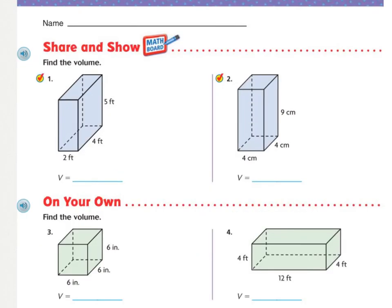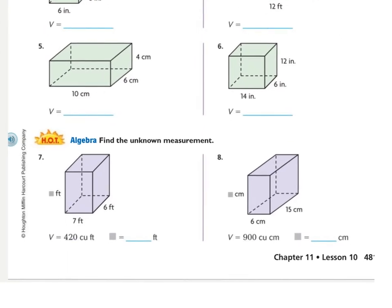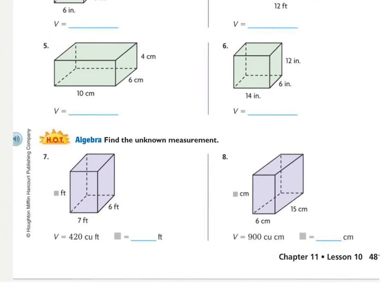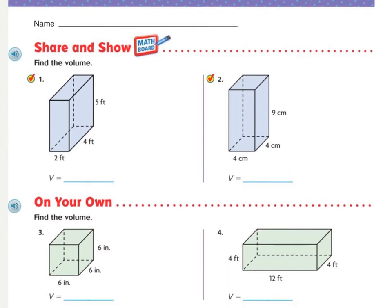On your share and show, they want you to find the volume of these two rectangular prisms. Use the formula. I'd like you to write it out and then give me the answer with the correct label. And then as you're working on your own, you're just going to notice that these ones are finding the area. And these number 7 and 8, you're doing what we did with part B. They give you the volume. And then they're asking you to find a missing dimension. So go ahead and work on your share and show first. And then press play to check your answers.